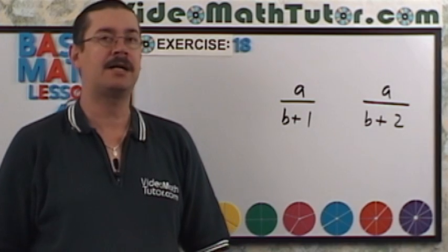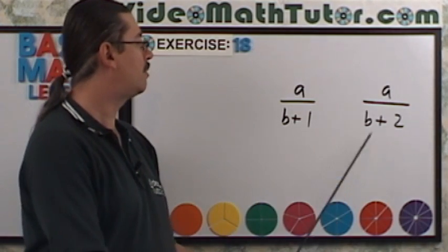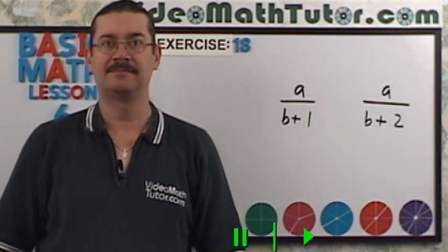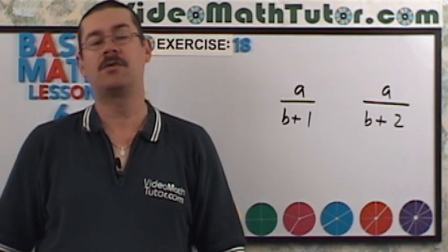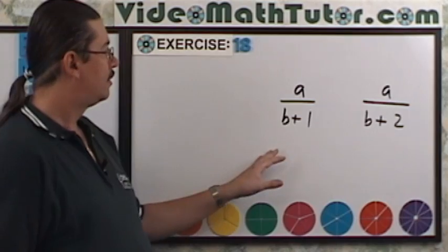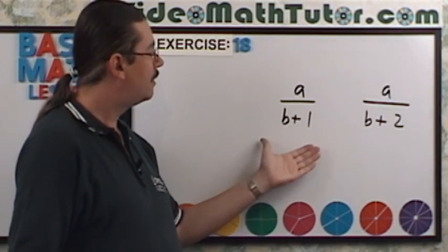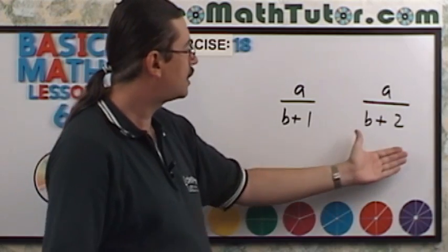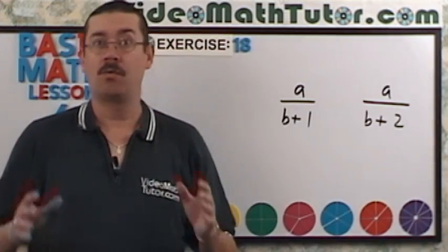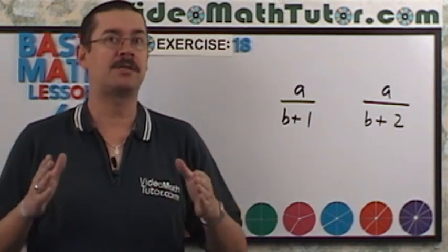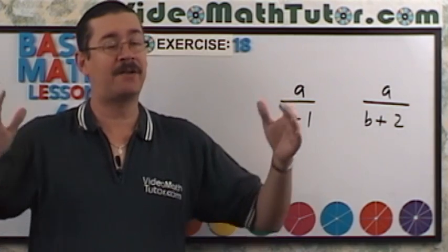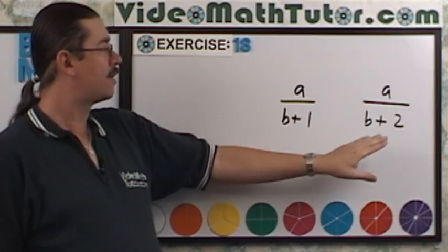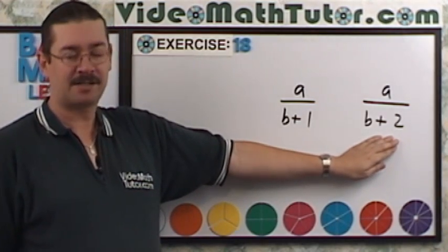For exercise 18, which of these fractions has a smaller value? Notice the numerators are the same, but the denominators have different values — one denominator is bigger. The rule: as denominators get larger, the fraction actually gets smaller if the numerators are the same. So the fraction with the larger denominator here is the smaller value.